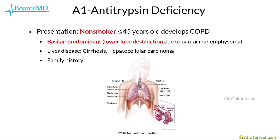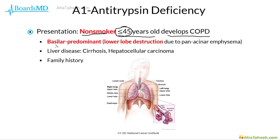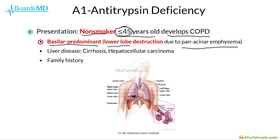Alpha-1 antitrypsin deficiency has been mentioned throughout this series. In alpha-1 antitrypsin deficiency, our classic patient is a non-smoker under the age of 45 who develops COPD. This younger age of COPD onset is a key tip-off. Another key clue is that the involvement is going to be basilar predominant, meaning it primarily destroys the lower lobes, as a result of the panacinar emphysema that develops in alpha-1 antitrypsin deficiency. Therefore, if you see a patient with COPD primarily affecting the lower lobes or basilar segments, think about alpha-1 antitrypsin deficiency.